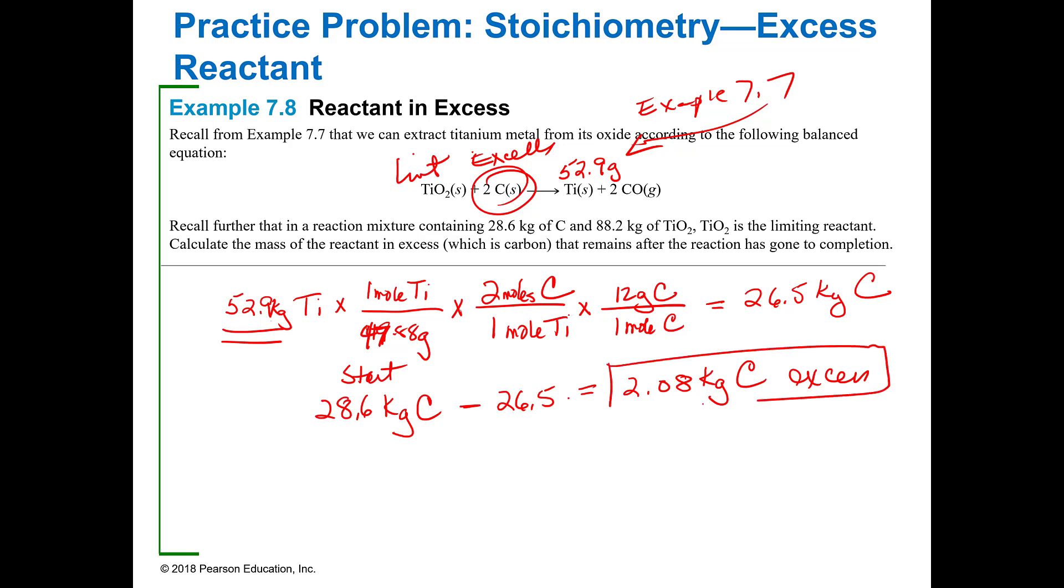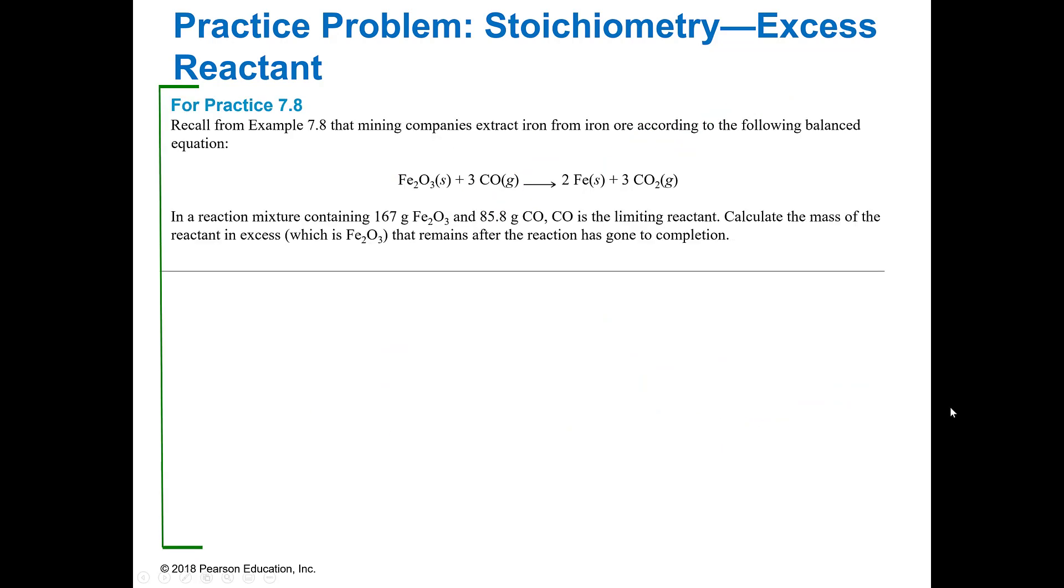This is a really important engineering calculation because if you are using too much of something, it costs money. And if it's an expensive thing, it can really cost you a lot of money. So this is a very important thing to be able to do to figure out what you have in excess. And then you can translate that to a dollar amount and suggest using only 26.5 grams of the carbon. And then you can save the company that much. Because if you do this over and over across year to year and it costs you 10 cents a gram or something, it can really add up.